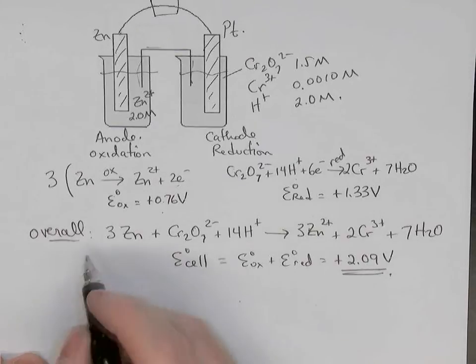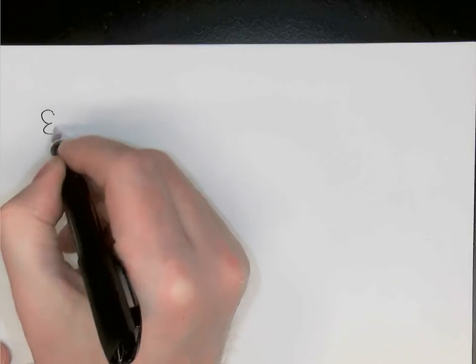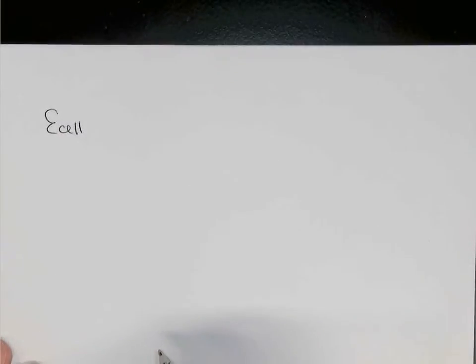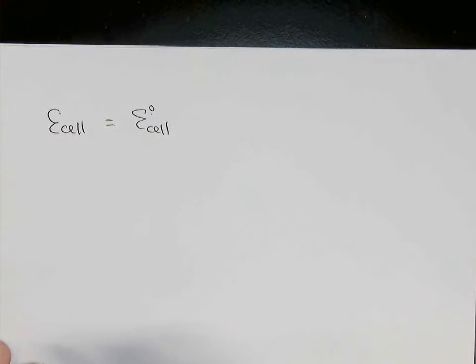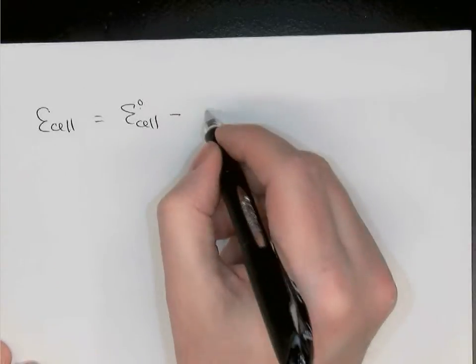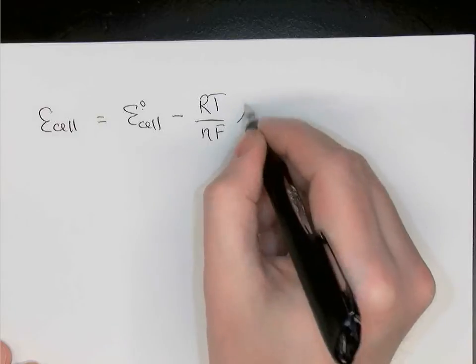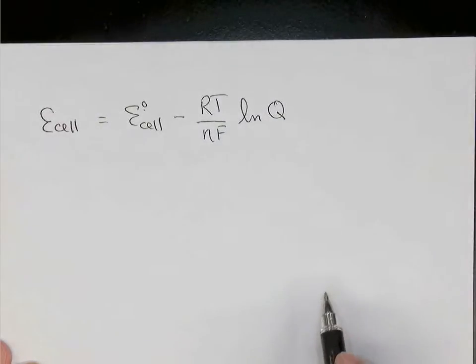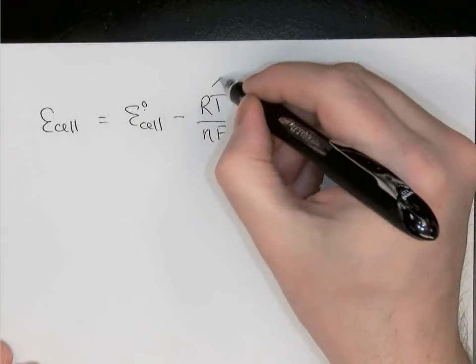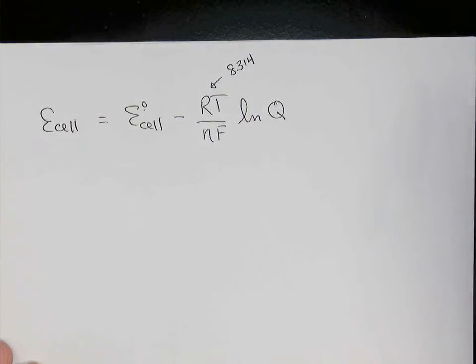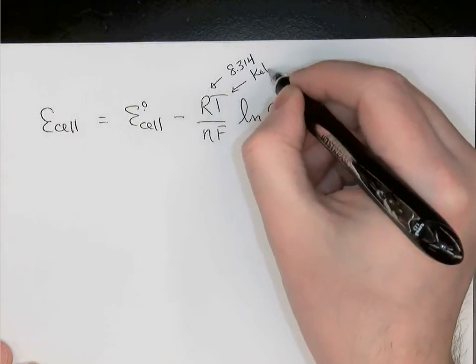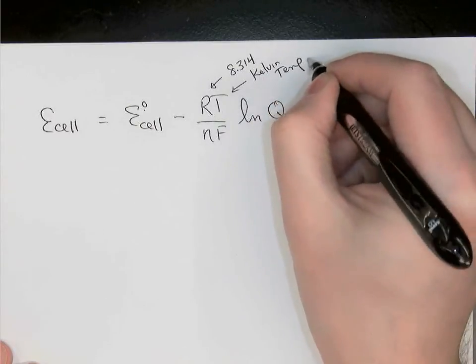And to do that, we're going to use the Nernst equation. The Nernst equation says that the cell potential under non-standard conditions, E-cell, is the standard cell potential, and that little degree symbol there means standard cell potential, minus RT over NF times the natural log of Q. And when we break this down, the R here is the gas constant using SI numbers, so 8.314 will be its value. The temperature is the Kelvin temperature.